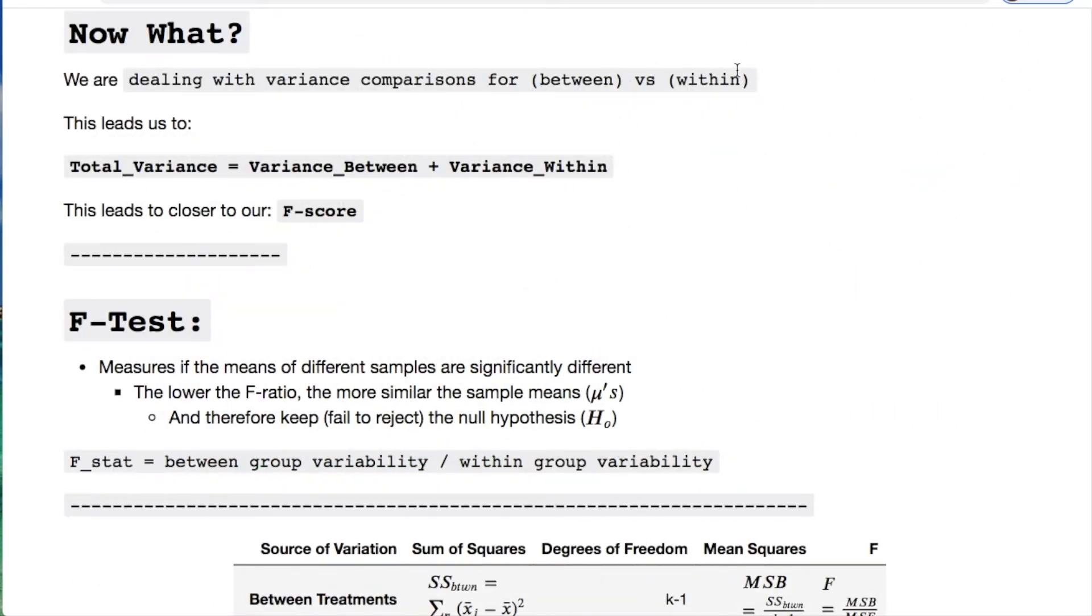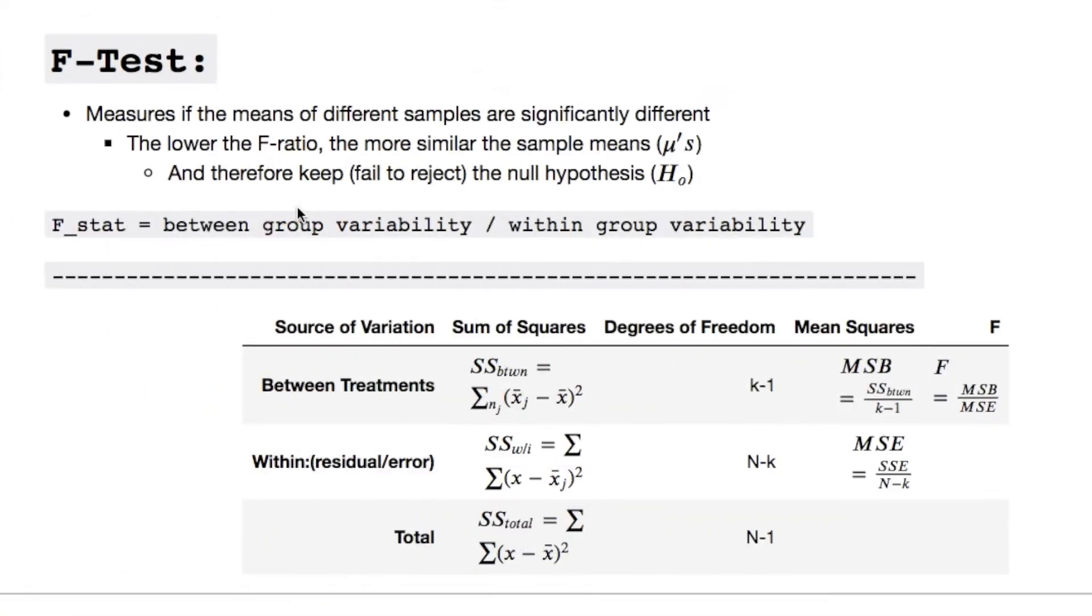This information. We are dealing with the differences in comparisons from between and within. The total variance is the variance between plus the variance within. This is going to lead us to what's called the f score or f stat. We do this called the f test. It's measuring if the means of different samples are significantly different. The lower the ratio of the f test, the more similar the sample means are. And therefore we will fail to reject the null hypothesis.